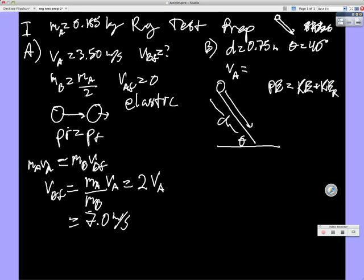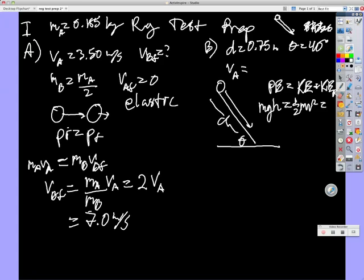And so we say PE equals KE plus KER. And then on your book, on page whatever, I think I mentioned this before, there's a table that shows the moment of inertia. So this is MGH. This is one half MV squared. And then the rotational... Why did I do that?